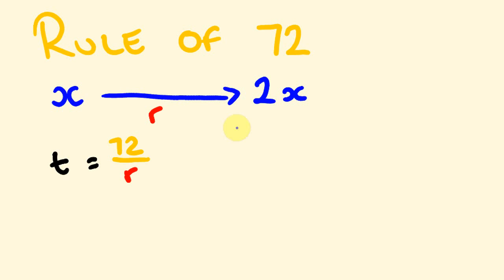So say I wanted to know at ten percent how long it would take. So say our interest rate is ten percent. What we would do is we would get 72 and we would divide by 10, so this would take 7.2 years.